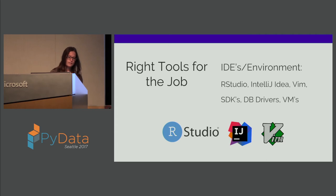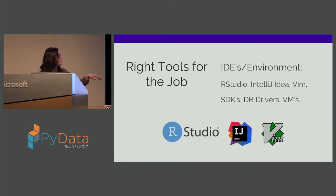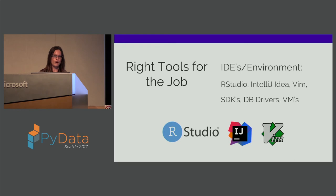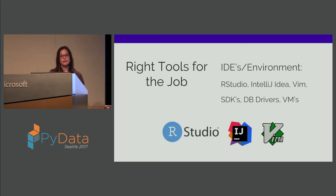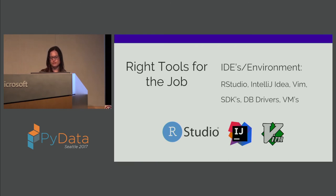I'll shout out Vim because there's nothing faster than opening it up for a really quick code edit in a script. But you'll want a full-fledged IDE for bigger projects. My three favorites: RStudio obviously for R, IntelliJ for Scala, Java, or Rust, and Vim for quick fixes and changes in bash or Python scripts.